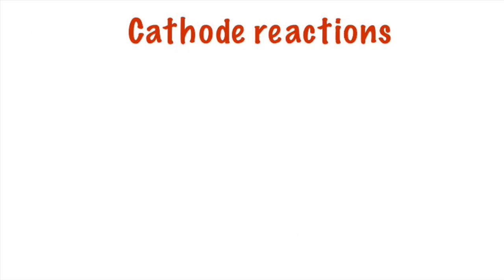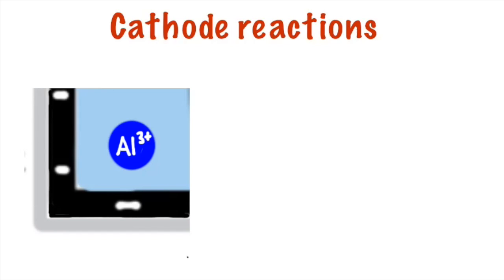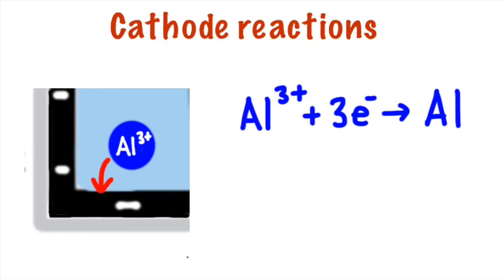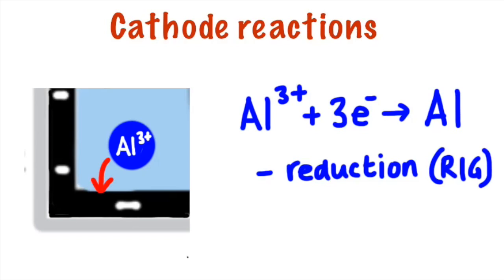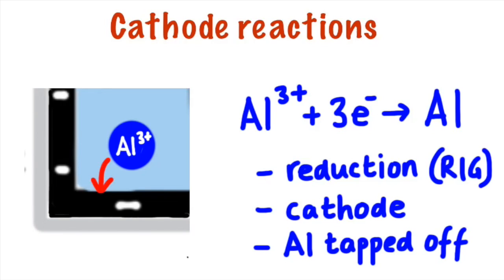Let's consider the cathode reactions. The Al3+ ions are positively charged and those are obviously attracted to the negative cathode and the reaction that takes place then, the Al3+ ions gain 3 electrons to form aluminium and I hope you remember of course that reduction is gained so this is a reduction reaction and reduction reactions take place at the cathode. So as the Al3+ ions gain 3 electrons to form aluminium, molten aluminium builds up and that molten aluminium is tapped off at regular intervals from the cell.